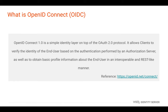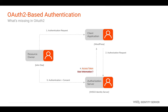OpenID Connect, commonly known as OIDC, is a well-known open standard used to implement federated authentication and single sign-on. OIDC is a simple identity layer on top of the OAuth 2.0 protocol. It allows client applications to verify the identity of end-users based on the authentication performed by an authorization server, as well as to obtain basic profile information about the end-user.